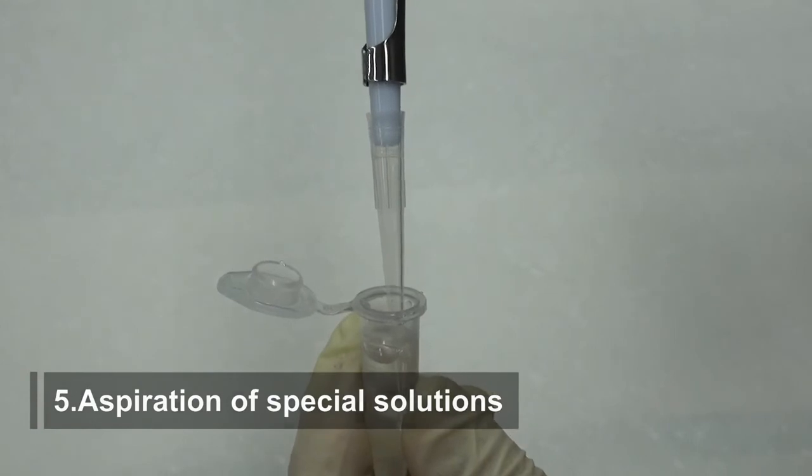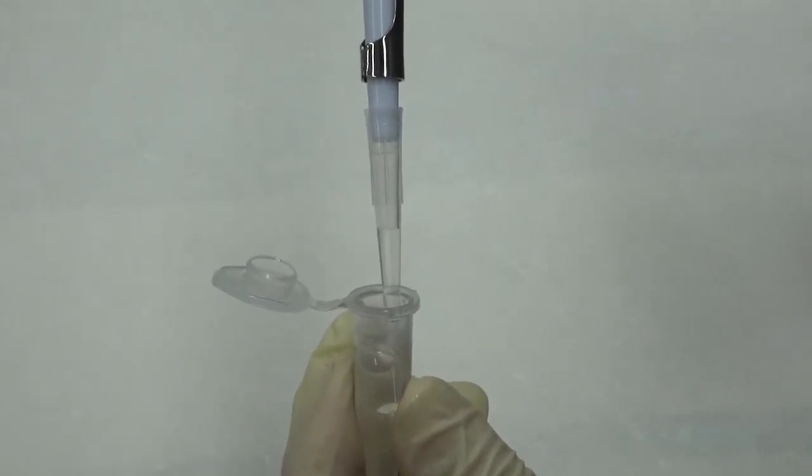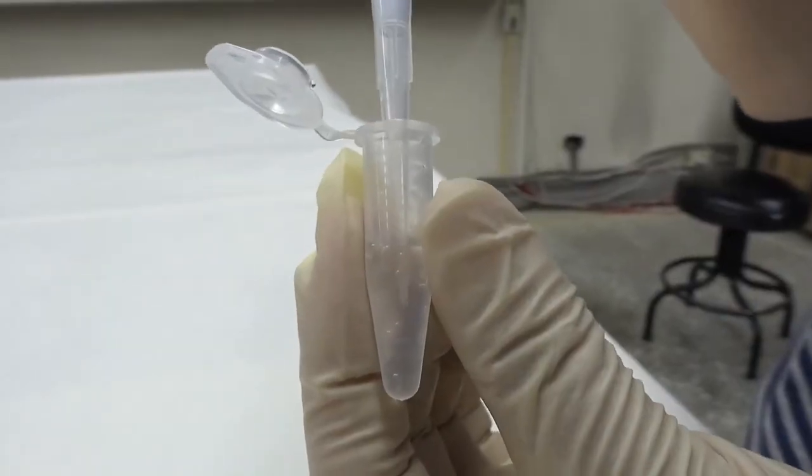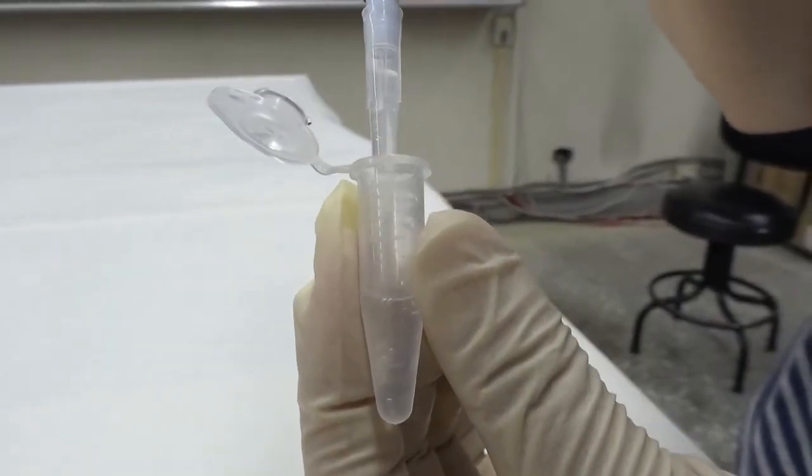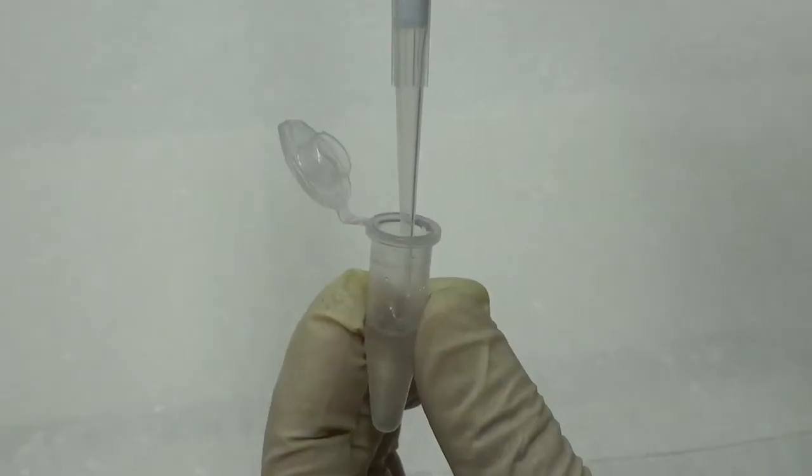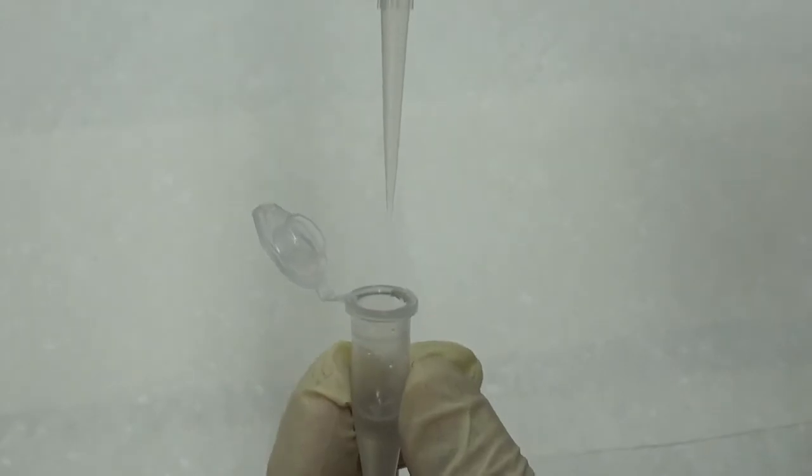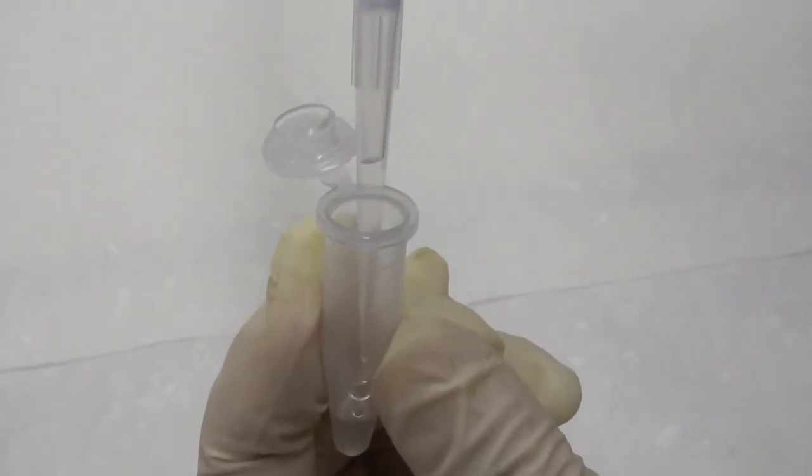Aspiration of special solutions. Solutions with a high viscosity should be aspirated more slowly. Or dilute the solution to a lower concentration before aspirating. Or cut the opening of the tip bigger. Or press the operating button down to the second stop to start aspirating and press only the first stop for dispensing.